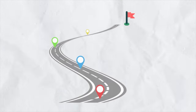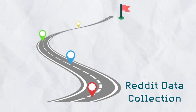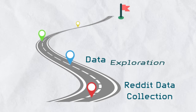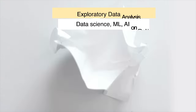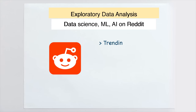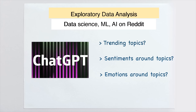We'll go through a few different steps. In the first half of the video, we'll be retrieving Reddit posts and comments related to data science using the Reddit API. Using this data, we'll first do some exploration to find out the trending data science topics on Reddit, the sentiment, and even people's emotions around topics such as ChatGPT, stable diffusion, etc.